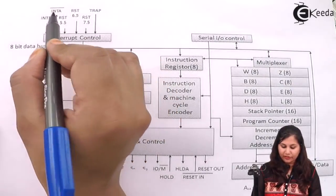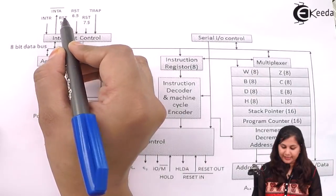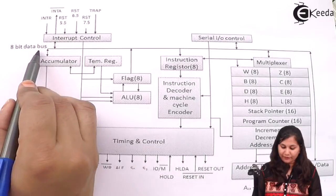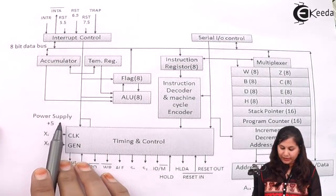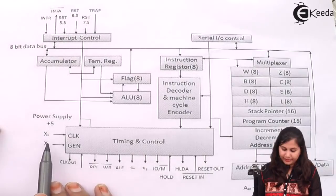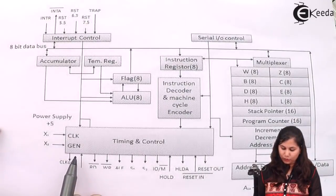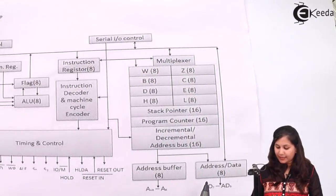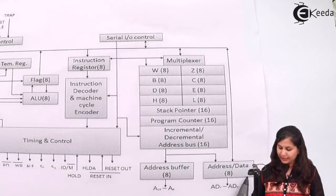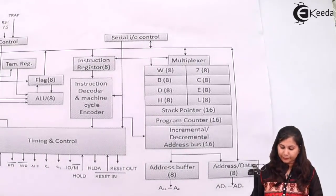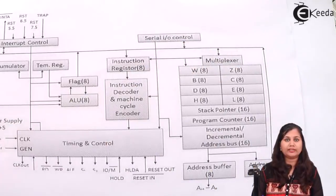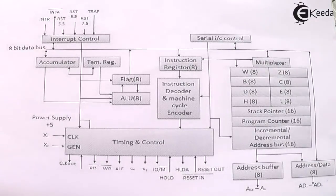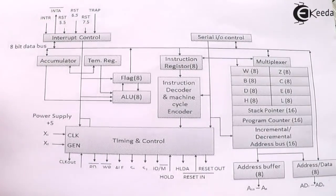Here we have the various interrupts: INTR, INTA, RST 5.5, RST 6.5, RST 7.5, and TRAP. Here we have the 8-bit data bus, the power supply, and the crystal connected at X1 and X2. Clock and general clock out are here. These are the various timing and control signals. Here we have the address buffer and the address and data bus, as well as serial input-output signals. So let us study each block of this diagram one by one.